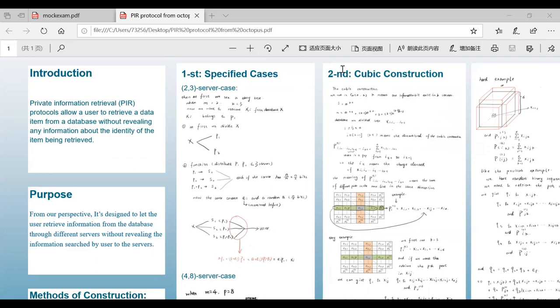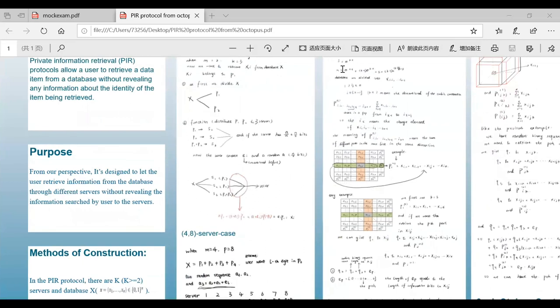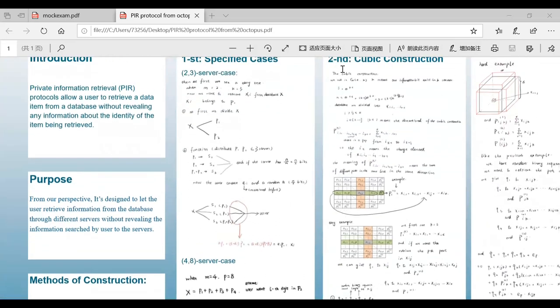And then we respectively put part 1, part 2, and part 1 plus part 2 into 3 servers. Each of them has n divided by 2 bytes.